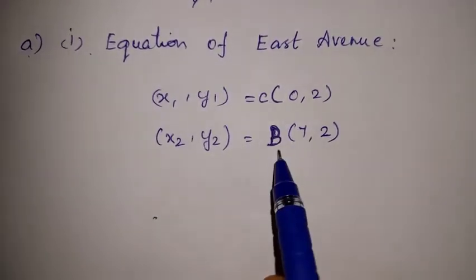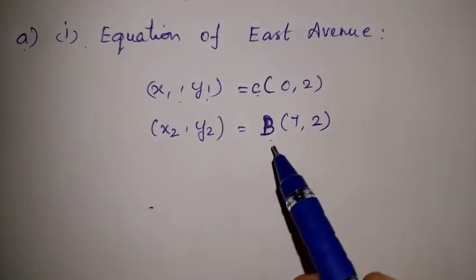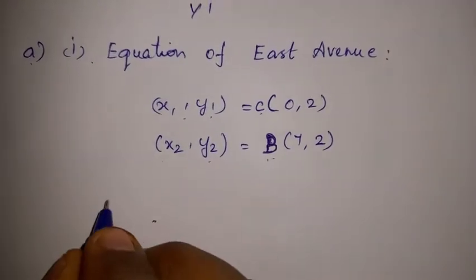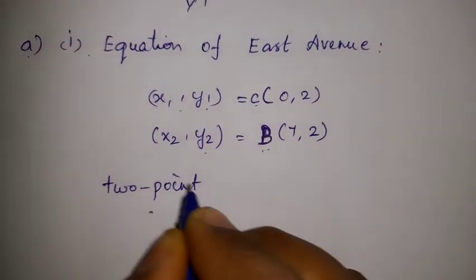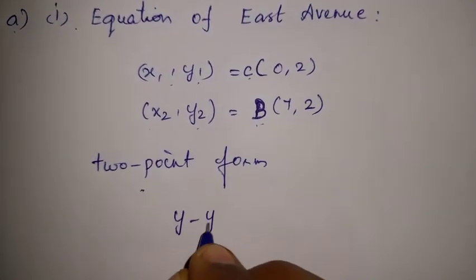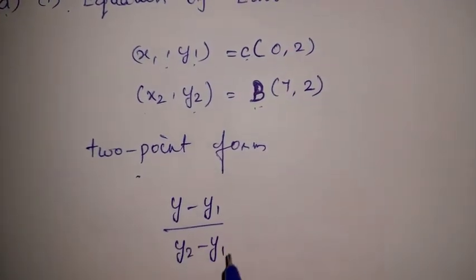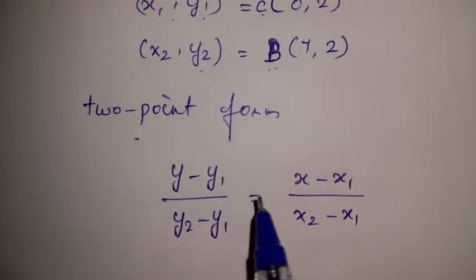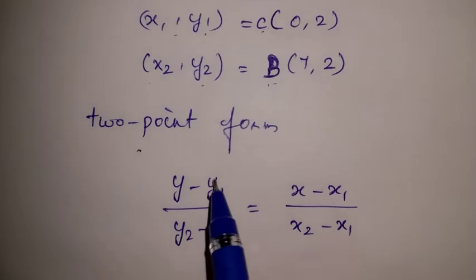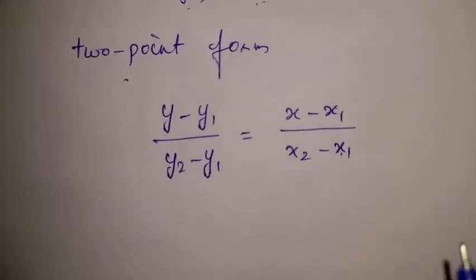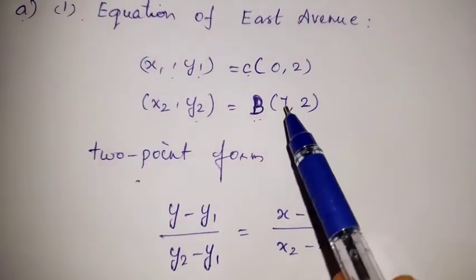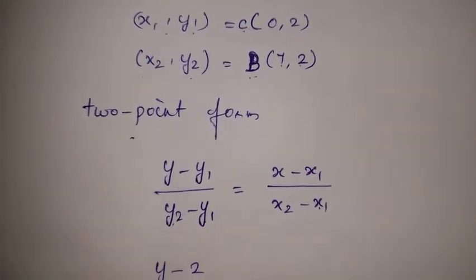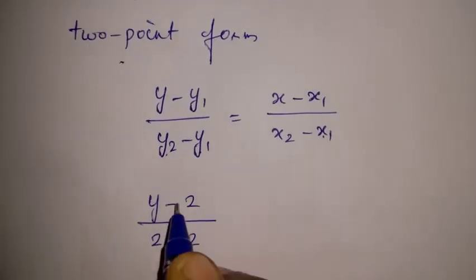Point C is (x1, y1) and Point B is (x2, y2). We use the two-point form: (y - y1)/(y2 - y1) = (x - x1)/(x2 - x1). Now the points x1, y1 and x2, y2 are known from the figure.